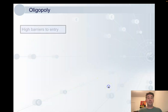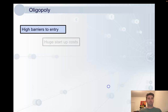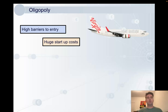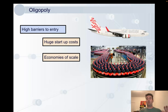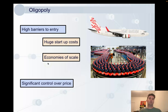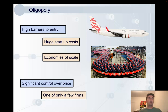Barriers to entry are high — think of the startup costs to compete with a supermarket like Coles and Woolworths. There are huge startup costs to compete with an airline as well; you're spending billions of dollars perhaps buying those planes. Another barrier is that because these firms are large, they can take advantage of economies of scale. The soft drink market is another oligopolistic market — to compete on price with Coke, a new entrant would have to produce on an enormous scale as well, otherwise they just couldn't compete on price. This makes it very difficult to enter the industry. And with their market power, they have significant control over price, being generally one of only a few firms in the market.